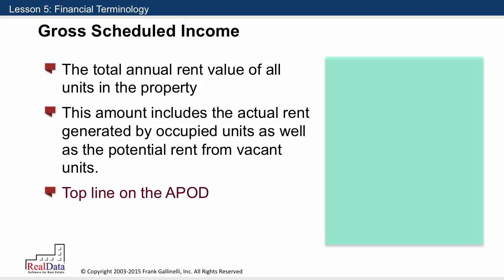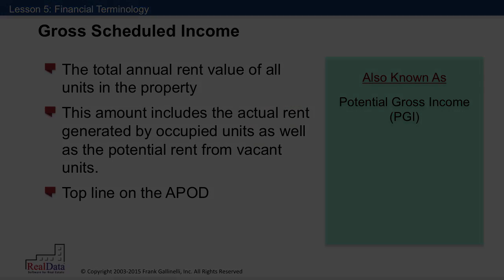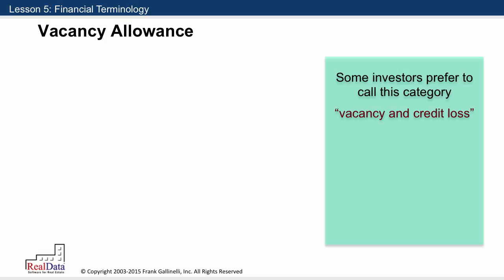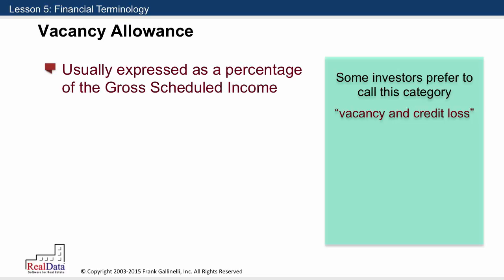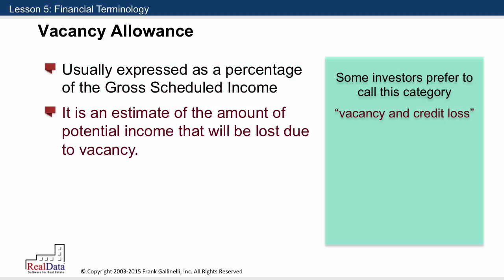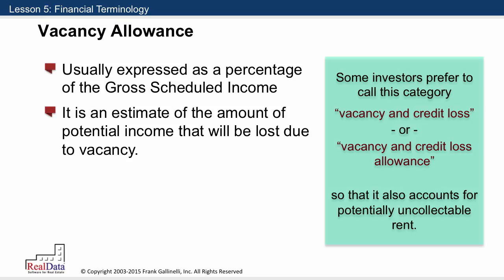This term has an alternative name, as several terms in real estate do — it's also called potential gross income. The next item is vacancy allowance, which is also sometimes called vacancy and credit loss. This is usually expressed as a percentage of the gross scheduled income, and as its name suggests, it's an estimate of the amount of potential income that will be lost due to vacancy. Credit loss is when the unit is, in fact, occupied but the check is no good — there's a loss due not to lack of occupancy but to lack of good funds. Some investors prefer to call this category vacancy and credit loss allowance, accounting for uncollectible rent as well as missing rent from vacant units.